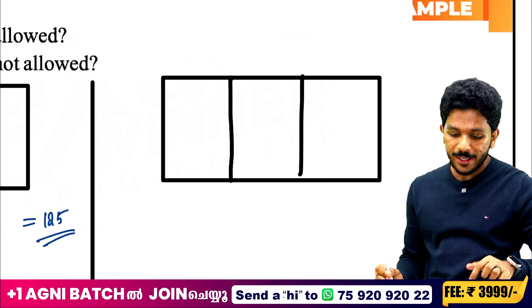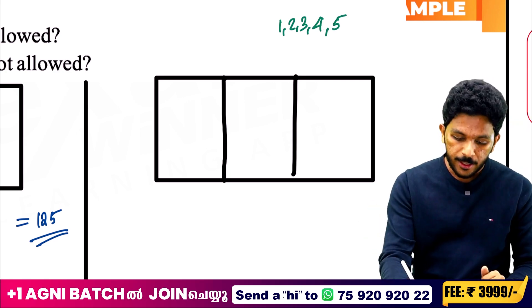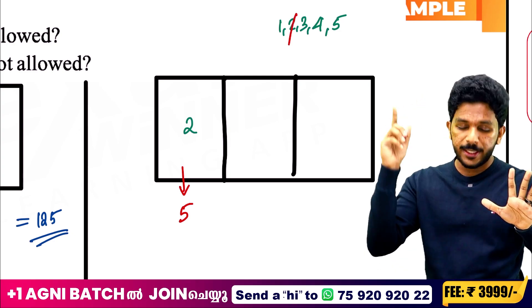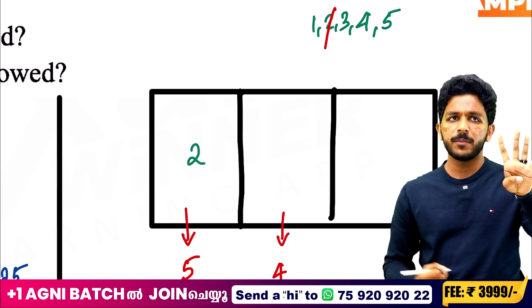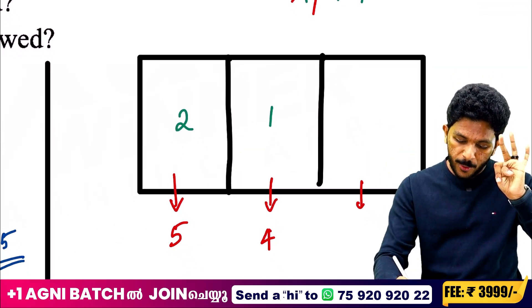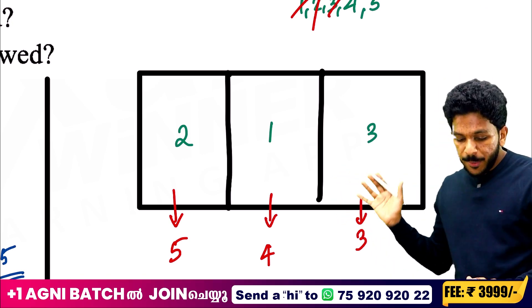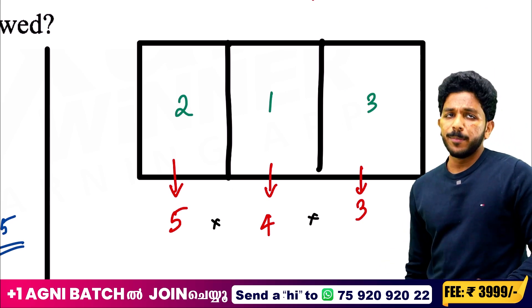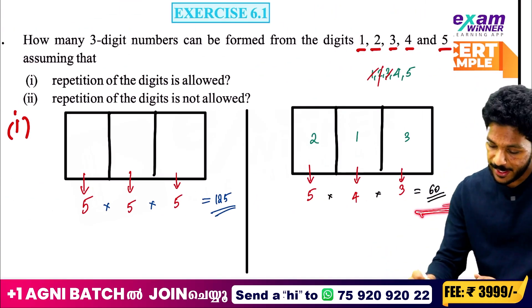Now, repetition is NOT allowed. We have the same numbers 1, 2, 3, 4, 5. For the first place I have 5 options, for the second place 4 options, then 3 options. Using the fundamental principle of counting, the multiplication is 5 × 4 × 3 = 60. So when repetition is allowed the answer is 125, and when not allowed it is 60.